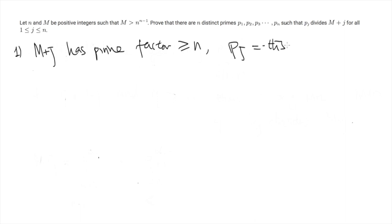And in this case, by following the argument on GCD, necessarily Pj is different from the other Pk because simply Pj does not divide other terms M plus k. So we are done in this case.